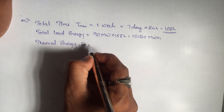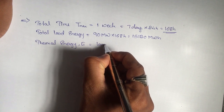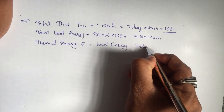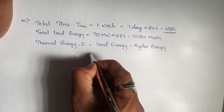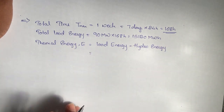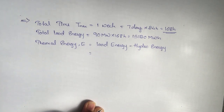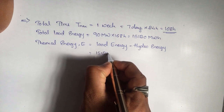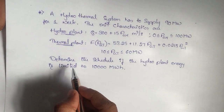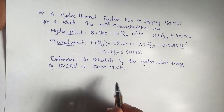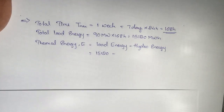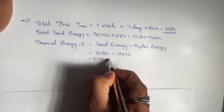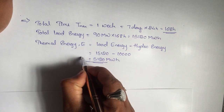The thermal energy E is equal to load energy minus hydro energy. The total thermal energy we need to generate equals the total load energy minus the hydro energy. Load energy is 15,120 megawatt hour minus hydro energy of 10,000 megawatt hour, giving E = 5,120 megawatt hour.